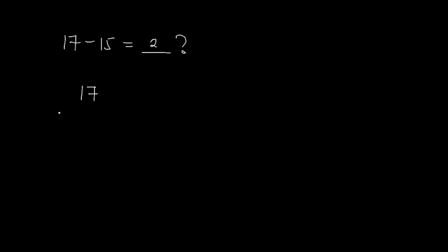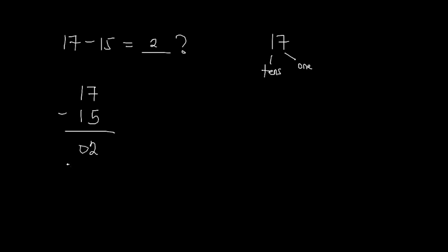Let's look at the column subtraction to see how we get 2. We write 17, bring our subtraction sign, then write 15. For two digits, this is your ones column and this is your tens column. You subtract the ones first, then move to the tens — and if there are three digits, you move on to the hundreds as well. So 7 minus 5 gives us 2. Now we move to the tens: 1 minus 1 gives us 0. Our final answer is 2.